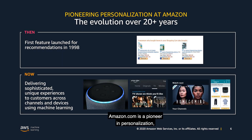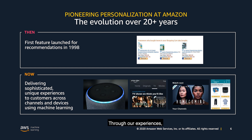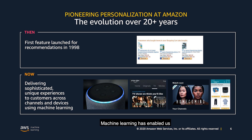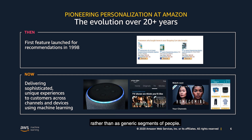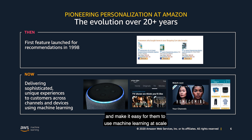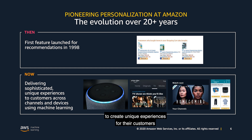Amazon.com is a pioneer in personalization with over 20 years of experience. Through our experiences, we recognize that different personalization strategies are needed for different use cases. Machine learning has enabled us to deliver unique experiences to individual customers using real-time data based on their behavior and preferences, rather than as generic segments of people. Our goal is to enable organizations to leverage our learnings and make it easy for them to use machine learning at scale with the data and systems they already have, to create unique experiences for their customers across multiple channels and devices.